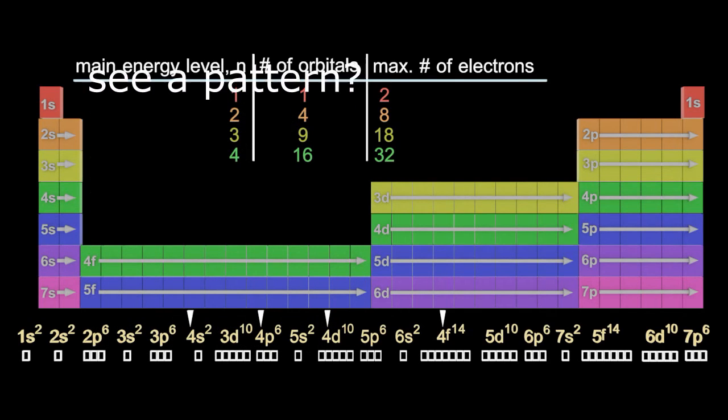So the equation is, if you want to work out the number of orbitals from the main energy level, it's just n squared. And if you want to work out the maximum number of electrons, it's going to be 2n squared.